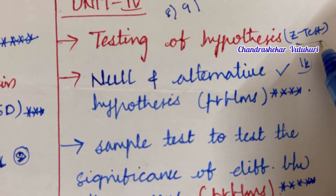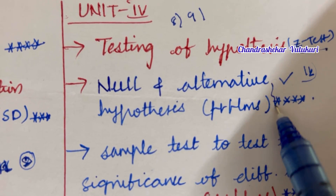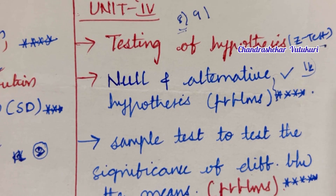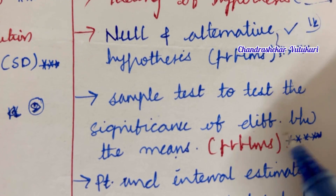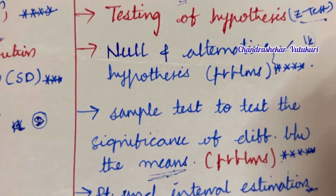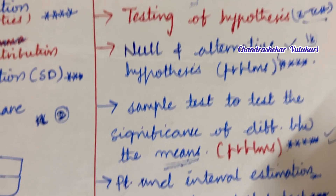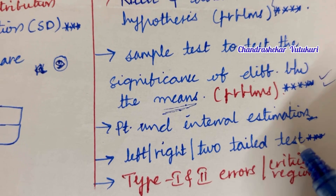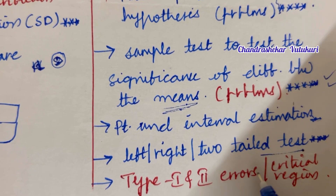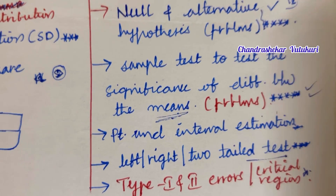The Z-test is said to be the topmost question. The null and alternative hypothesis as well as problems related to it may be asked in the 8th question. The sample test to test the significance of difference between means is said to be the topmost question, which may occur in the 9th question. Point and interval estimation, left tail, right tail, and two-tail tests may be the short question, and Type 1 and Type 2 errors as well as critical region may also be short questions this time.